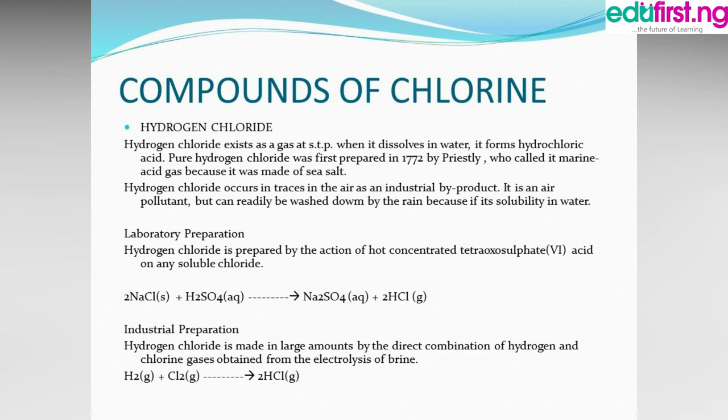Laboratory preparation: Hydrogen chloride is prepared by the action of concentrated sulfuric acid (H₂SO₄) on any soluble chloride. Here, sodium chloride reacts with H₂SO₄ to give sodium sulfate and hydrogen chloride gas. Industrial preparation: It is made in large amounts by the direct combination of hydrogen and chlorine gases obtained from the electrolysis of brine.